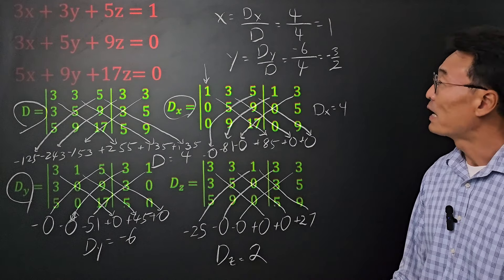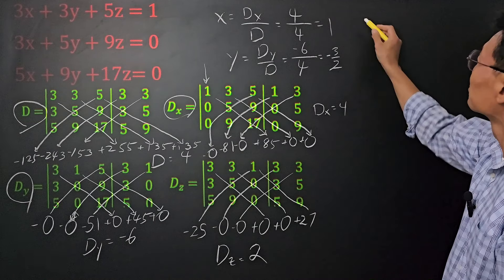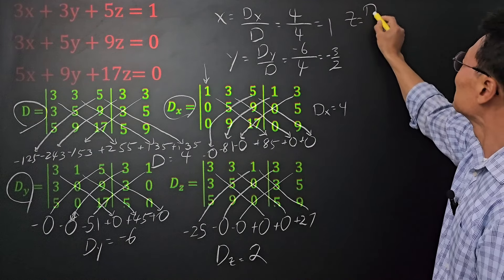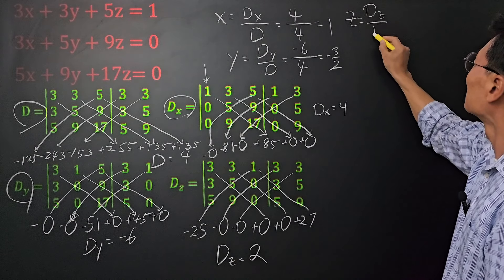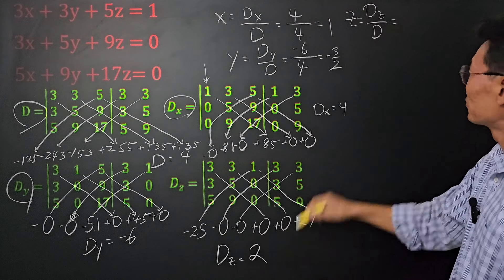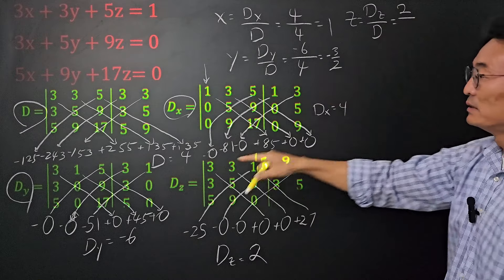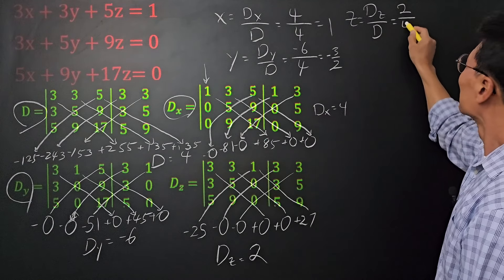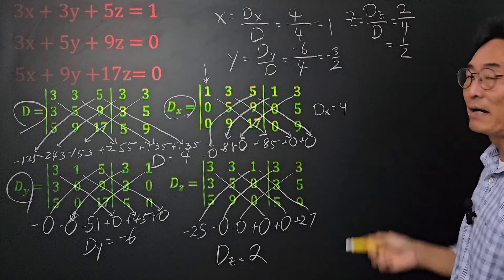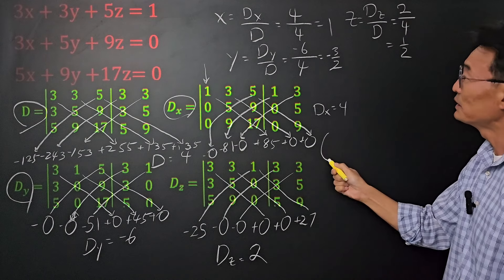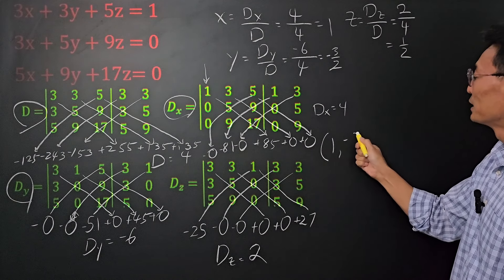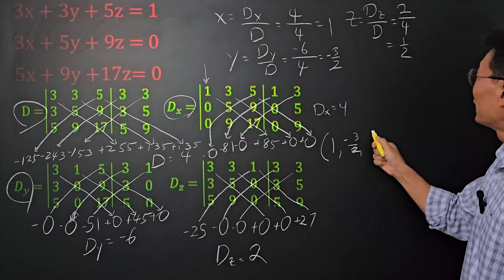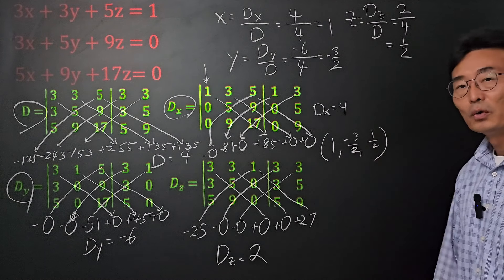So our final answer for z is dz over d, where dz is 2 and d is 4, giving us 1/2. Our final answers are x = 1, y = negative 3 over 2, and z = 1/2.